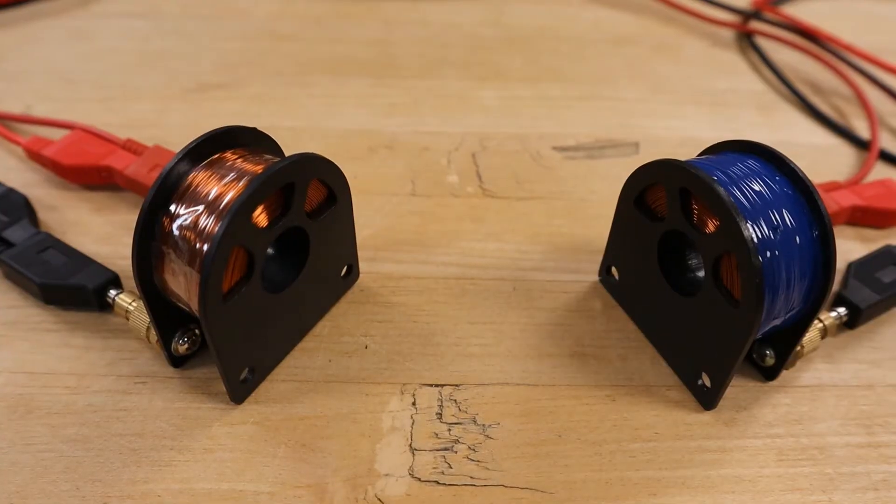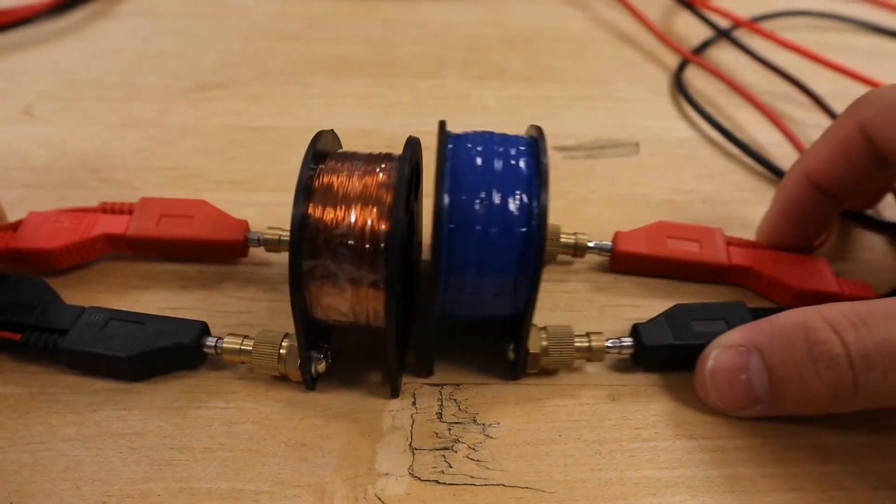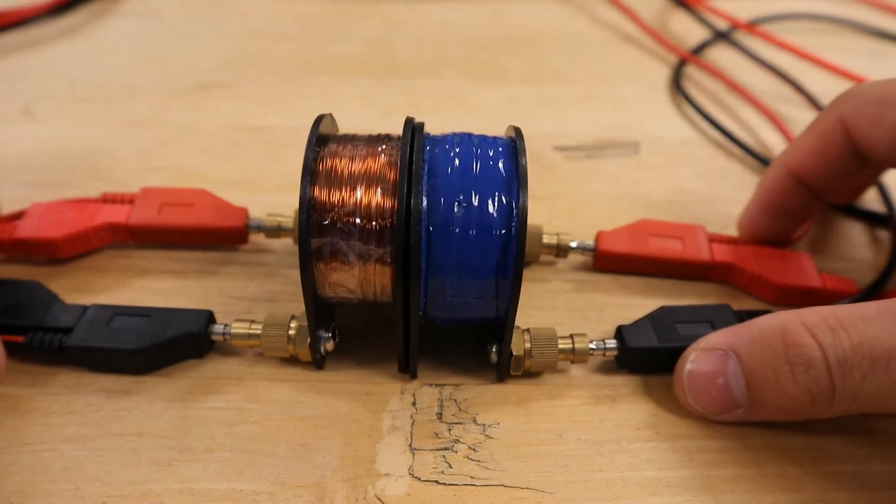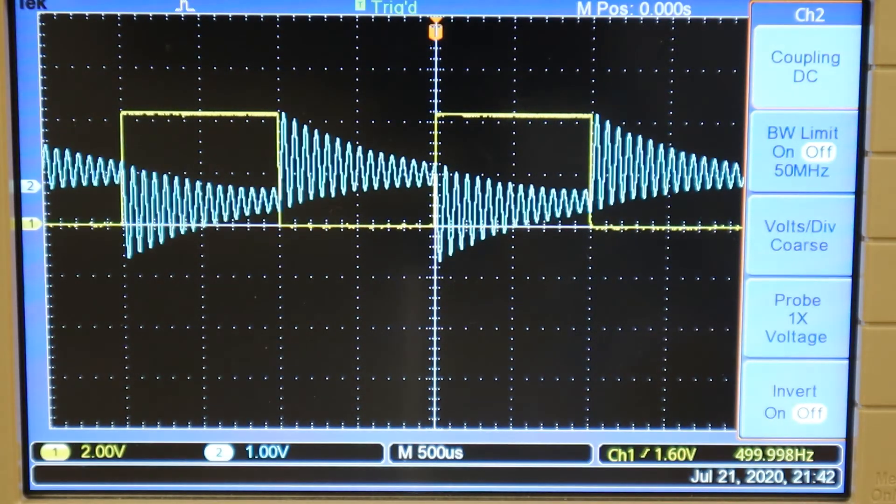Now, when the ghillie coils are placed coaxially to each other, or in such a manner as the centers of the coils are aligned, a damped oscillation should be visible on the second channel of the oscilloscope.